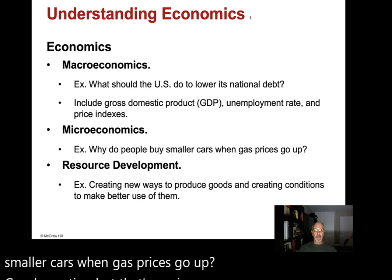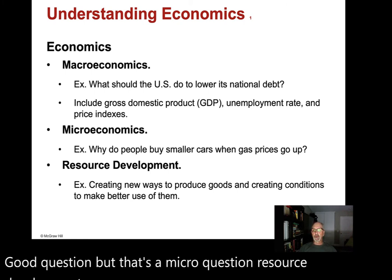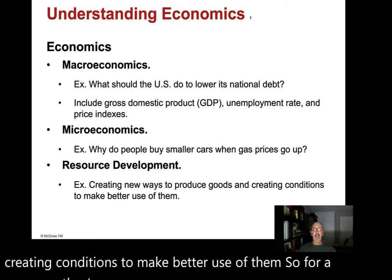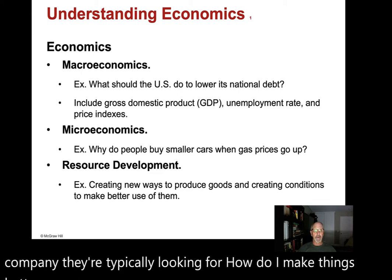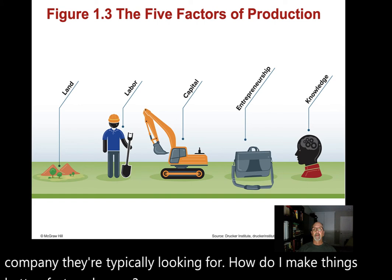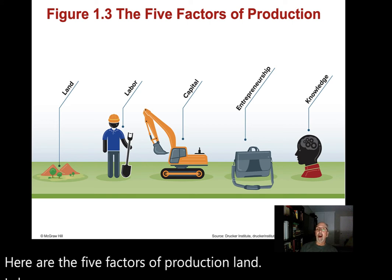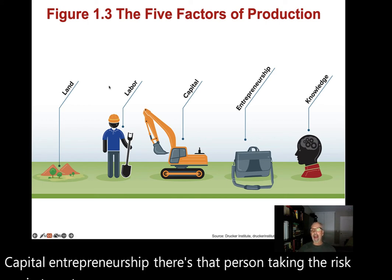Resource development involves creating new ways to produce goods and creating conditions to make better use of them. For a company, they're typically looking for how to make things better, faster, cheaper. Here are the five factors of production: land, labor, capital, entrepreneurship — that person taking the risk to get everything moving — and knowledge.